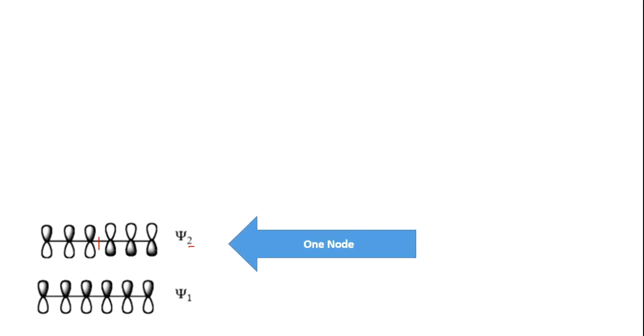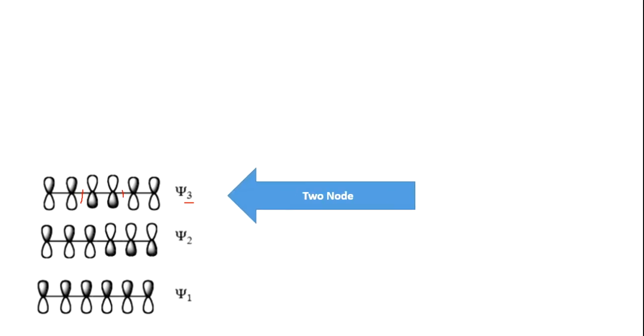And in the other structure, that is ψ3, there is n minus 1, that is 3 minus 1, which is 2 nodes. You can see that here and here, 2 nodes are there. And there is 2 nodes. And similarly, these 3 are bonding.